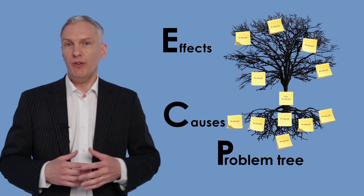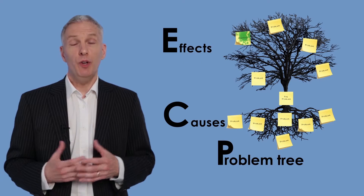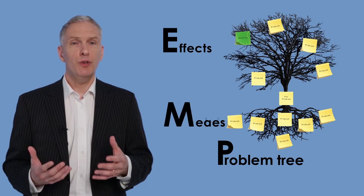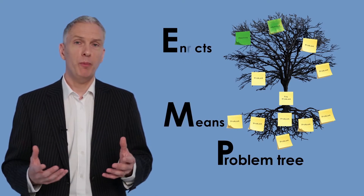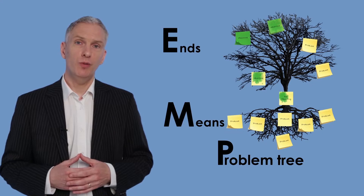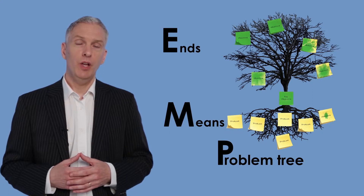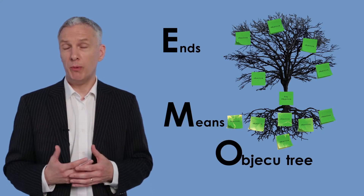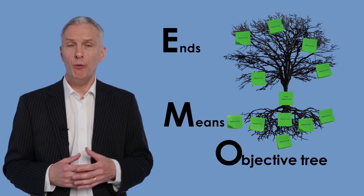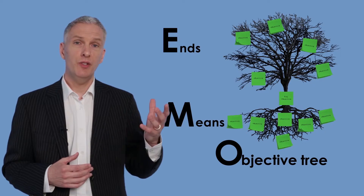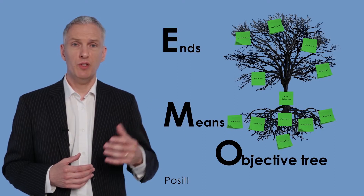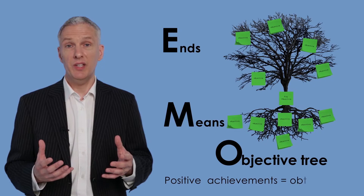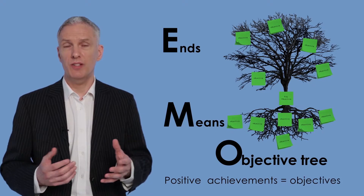The objective tree will give you an overview of the desired future situation, when the problems will have been solved. To build it, the negative situations of the problem tree will be converted into positive situations that can be realistically achieved — that is, into objectives.